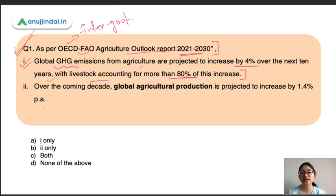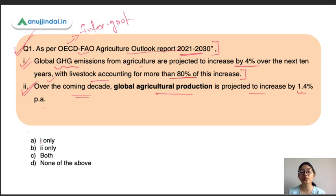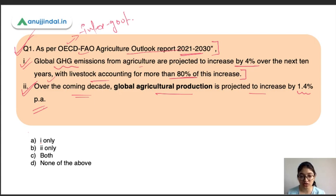The second statement says: over the coming decade, global agriculture production is projected to increase by 1.4% per annum. This is the projection from the OECD-FAO report. This statement is also correct, so the correct option would be C — both statements are correct.